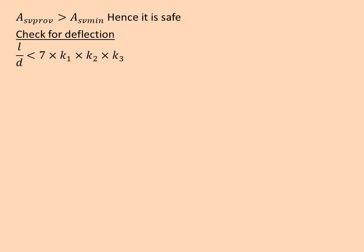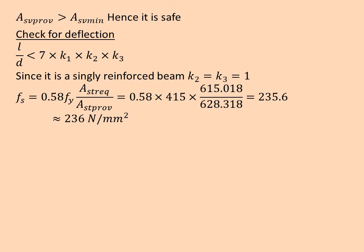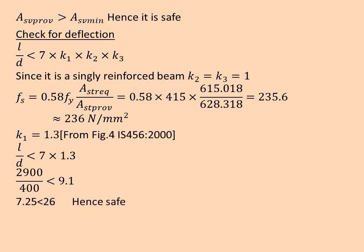Now we check for deflection. L/D should be less than 7 × k1 × k2 × k3. For singly reinforced beams, k2 and k3 value is equal to 1. Now to find k1, it is given in figure 4 of the IS code, y-axis modification factor and x-axis PT value with curves fs that is service stress of steel. After we substitute in this formula, 0.58 × fy × Ast required / Ast provided, we get 236 N/mm². I get k1 is equal to 1.3. It can be 1.1 as well. After that, we check the value L/D less than 7 × 1.3, which is 9.1. We see that 7.25 is less than 9.1, hence it is safe.